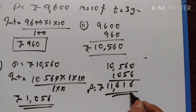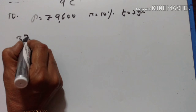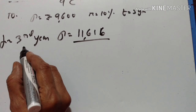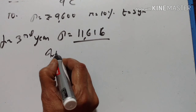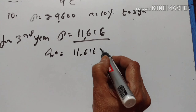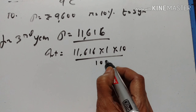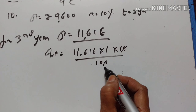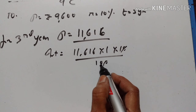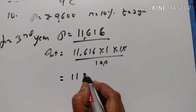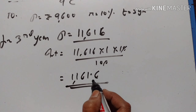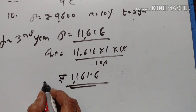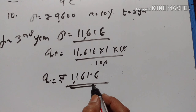This becomes the principal for the third year. Let us calculate the interest for the third year now. For the third year, the principal is equal to Rs. 11,616. Therefore, interest is equal to P, T, R upon 100. Rs. 11,616 divided by 10 is equal to Rs. 1,161.6. This is the interest for the third year.